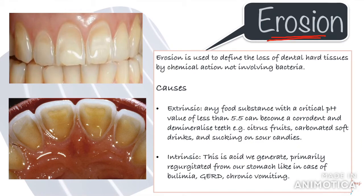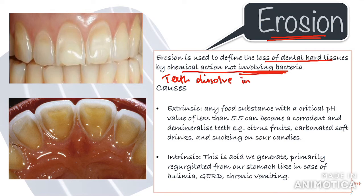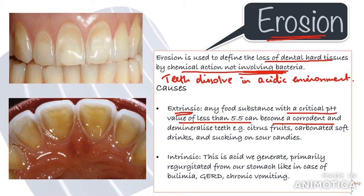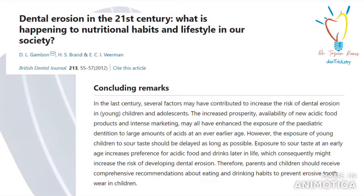Next, we will see what tooth erosion is all about. The term erosion is used to define the loss of dental hard tissues by chemical action not involving bacteria — in simple terms, teeth dissolve in an acidic environment. The correct scientific term is corrosion, but most dentists have learned it as erosion. There are two main sources of acid in the mouth. Extrinsic acid comes from outside — any food substance with a critical pH below 5.5 can demineralize teeth, such as citrus fruits, carbonated soft drinks, and sour candies. Because carbonated drinks have become a major component of many diets, particularly among the young, tooth erosion is becoming increasingly common in the younger population.